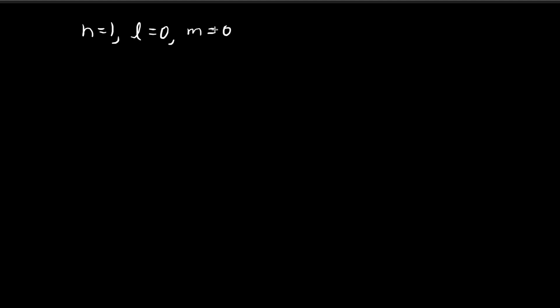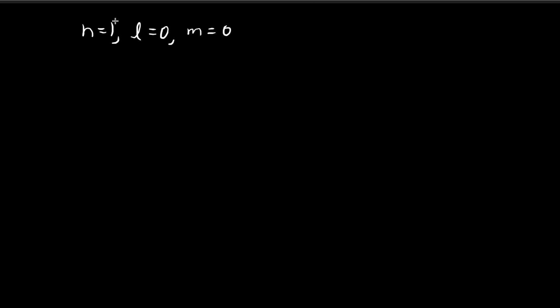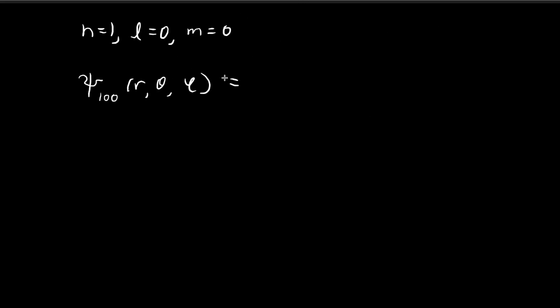l = 0 and m = 0 are the only choices when n = 1. If you have a larger value of n, say n = 4, you have greater freedom on what l and m could be — there are obviously fewer restrictions. But for the ground state, l and m can only be equal to 0. So now we're going to construct ψ₁₀₀(r, θ, φ).